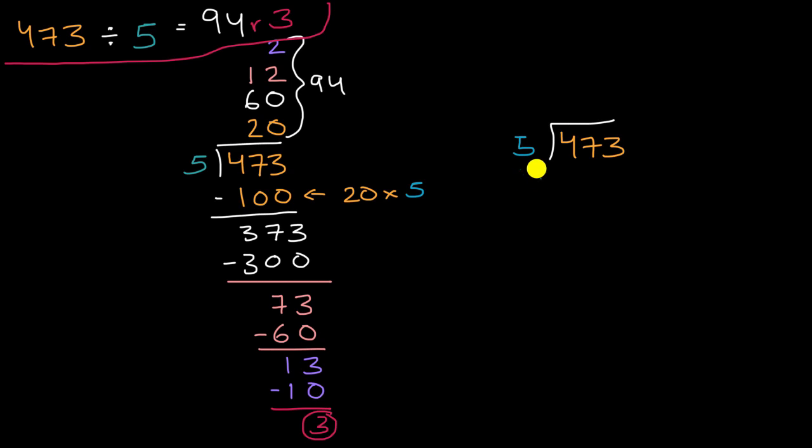And we might have immediately recognized that 5 goes into 40 eight times, so 5 would go into 400 eighty times at least, probably more times than that, but let's just start with 80. And so how close does that get us to 473? Well, to figure that out, we multiply 80 times 5 to get 400. And so can we fit any more fives into the difference? So let's figure out the difference. So we will subtract, and just to be very clear, this was 80 times 5. The reason why we did that is to say, how close did we get to 473? And now we want to figure out how much do we have left over? How many more fives can we fit in? And so you subtract 400 from 473, and we are going to get 73.